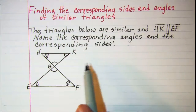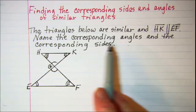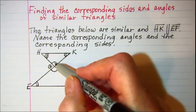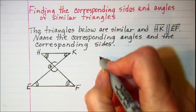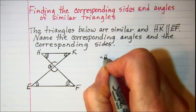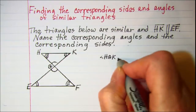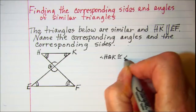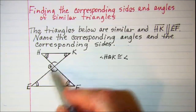Now we can write our corresponding angles. We want the single-notched angles, so we would say angle HGK is congruent to angle FGE.